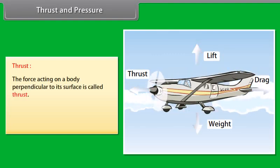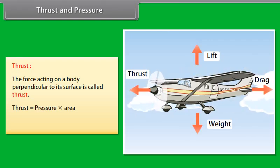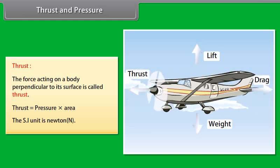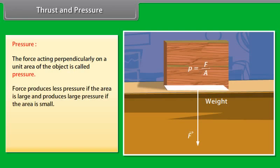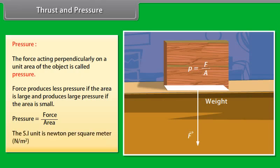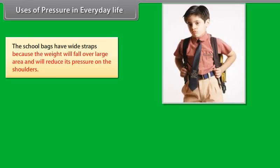Thrust and pressure: Thrust is the force acting on a body perpendicular to its surface. Thrust = Pressure × Area; its SI unit is Newton. Pressure is the force acting perpendicularly on a unit area of an object. A force produces less pressure if the area is large, and more pressure if the area is small. Pressure = Force / Area; SI unit is Newton per square meter. Uses in everyday life: school bags have wide straps so the weight is spread over a large area, reducing pressure on the shoulders.